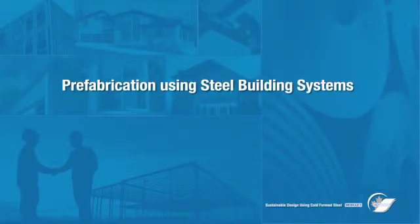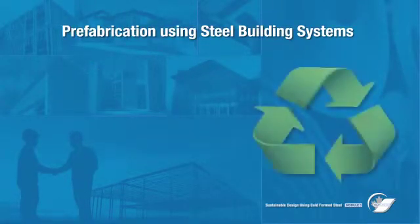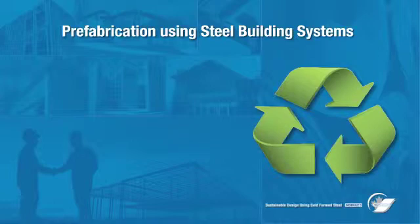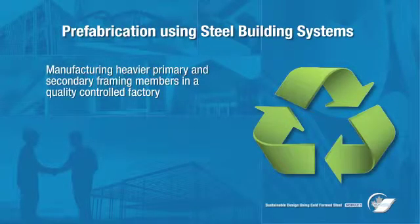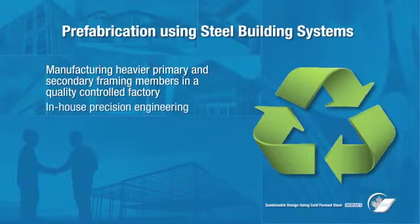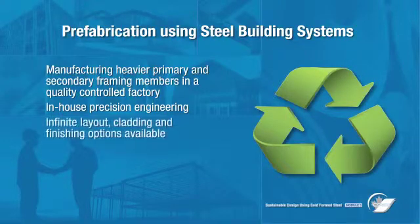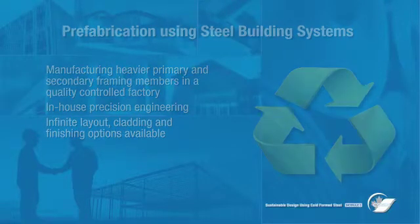With steel building systems, structural steel, cladding components, and related accessories are engineered to perform as an integrated system. Benefits include manufacturing heavier primary and secondary framing members in a quality-controlled factory, in-house precision engineering, and infinite layout, cladding, and finishing options.